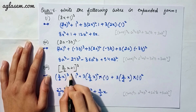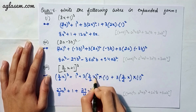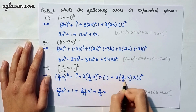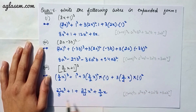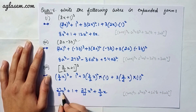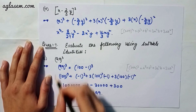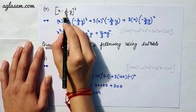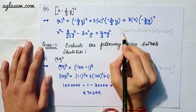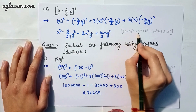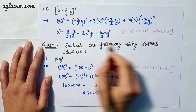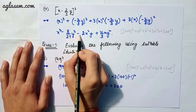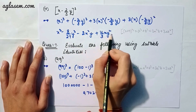Moving to our third part: (3/2 x + 1)³. Applying the same formula, the answer is 27/8 x³ + 1 + 27/4 x² + 9/2 x. Moving to our fourth part: (x − 2/3 y)³. Applying the same identity (a + b)³ = a³ + b³ + 3a²b + 3ab², the answer is x³ − 8/27 y³ − 2x²y + 4/3 xy².